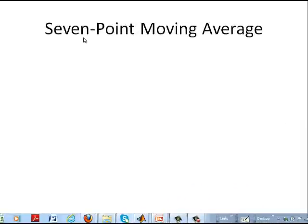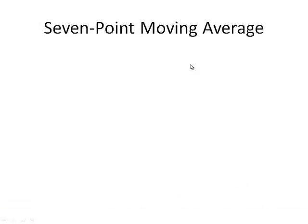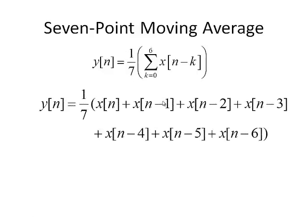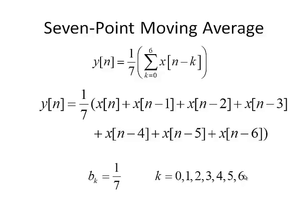Here's another example — in this case, it's a 7-point moving average. We're going to start from k equals 0 to 6, and we're going to weigh it by one-seventh. So we're averaging 7 values of the input. The filter coefficients all have equal weight of one-seventh, going from k equal to 0 to 6. There is also a closed-form formula where you can describe this moving average filter in a more compact form, which is shown on the next slide.